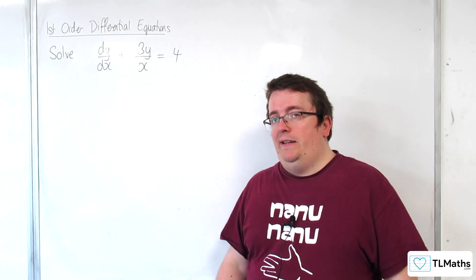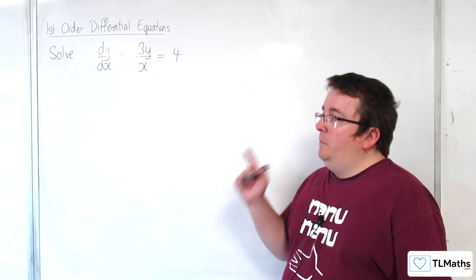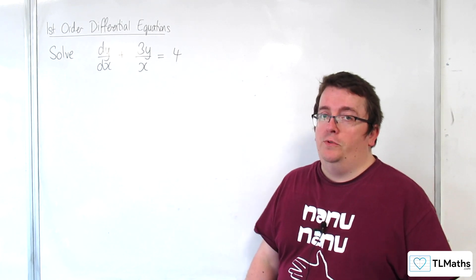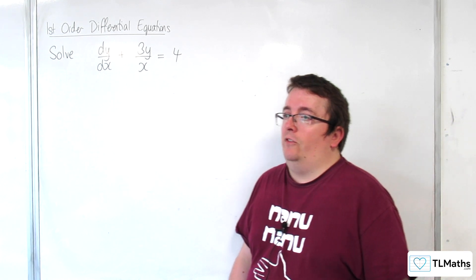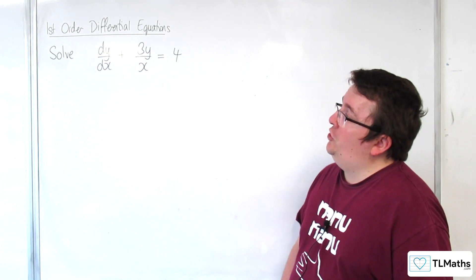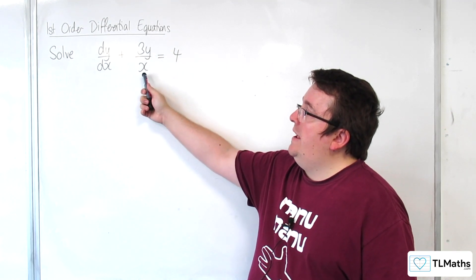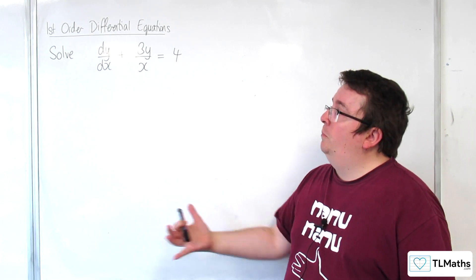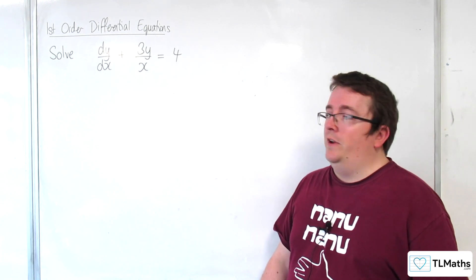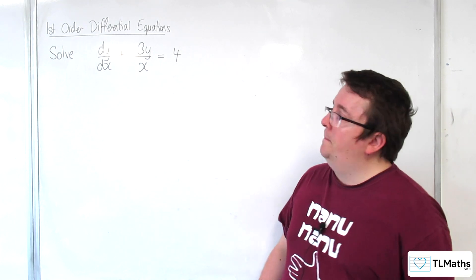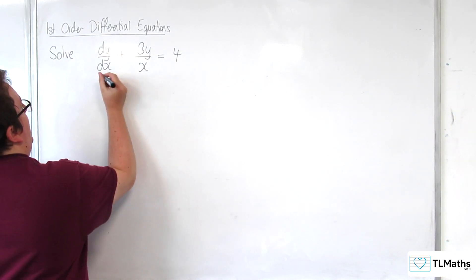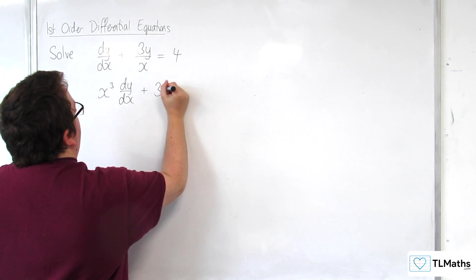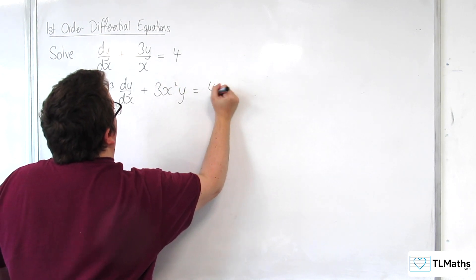It's not going to be immediately obvious as to what that should be, but I'm going to show you a way that we can do that. So let's say we've multiplied through by x cubed. Multiplying both sides by x cubed — you might be worried about introducing extra solutions. The situation is that we're dividing through by x here, so x equals 0 is not going to be a solution. Multiplying through by x cubed is a valid move, as long as we know that x isn't 0. So multiply through by x cubed and we get x cubed dy/dx plus 3x squared y is equal to 4x cubed.